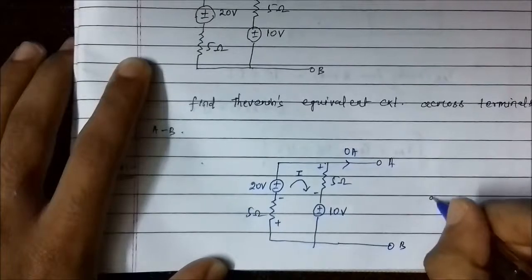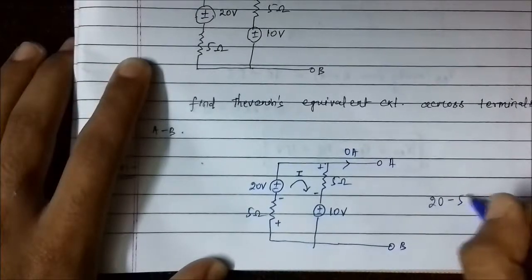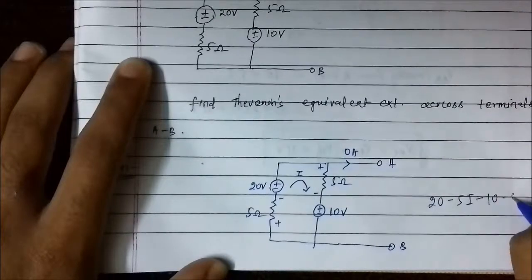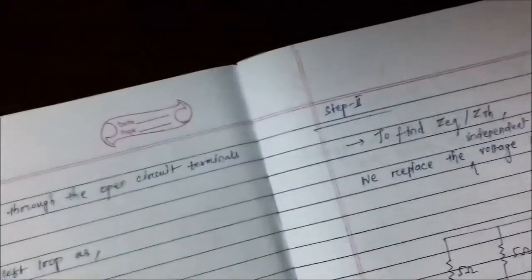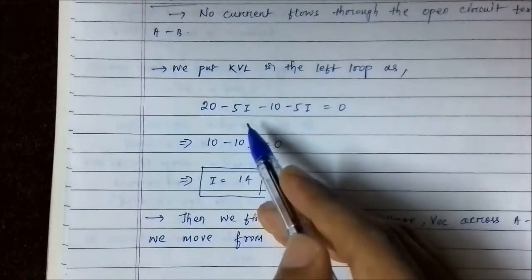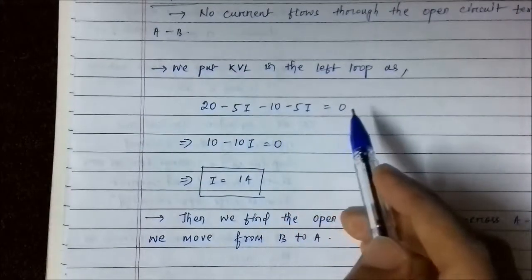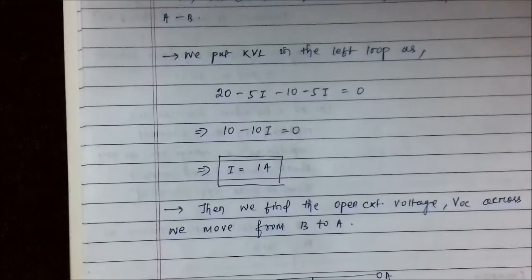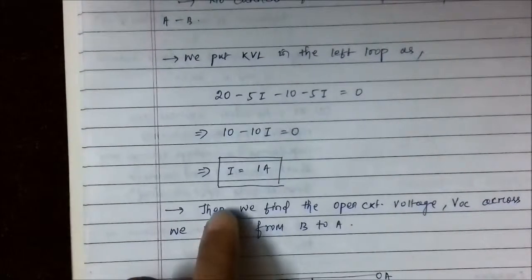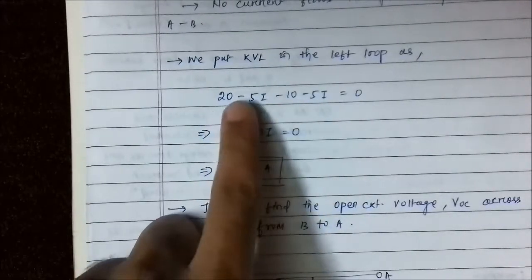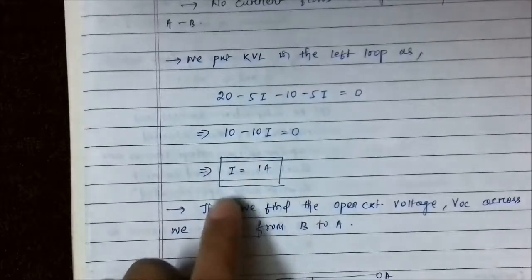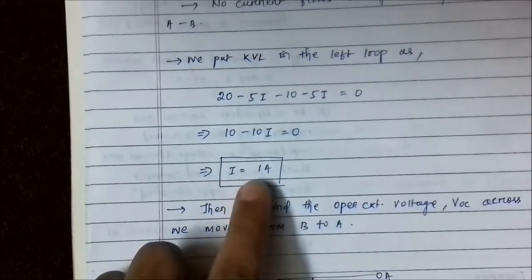The KVL equation is: 20 − 5I − 10 − 5I = 0. Solving: 10 − 10I = 0, so 10I = 10, giving I = 1 ampere. That is the mesh current.